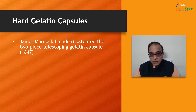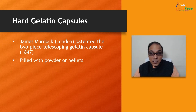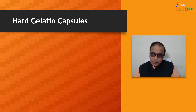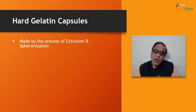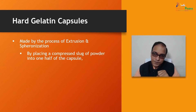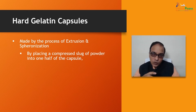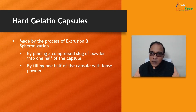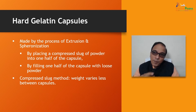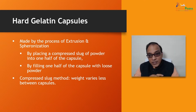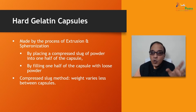James Murdoch in London patented the two-piece telescoping gelatin capsule in 1847. They are filled with powders or more normally pellets, made by the process of extrusion and spheronization. Capsules are also prepared by placing a compressed slug of powder into one half of the capsule. In the compressed slug method, weight varies less between capsules, though the machinery required to manufacture capsules is more complex.